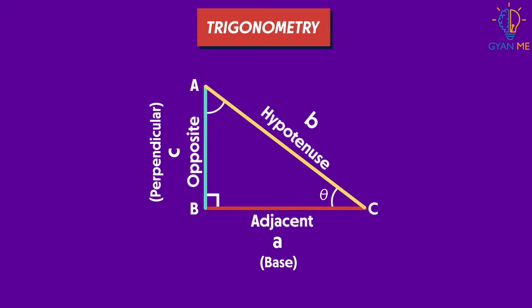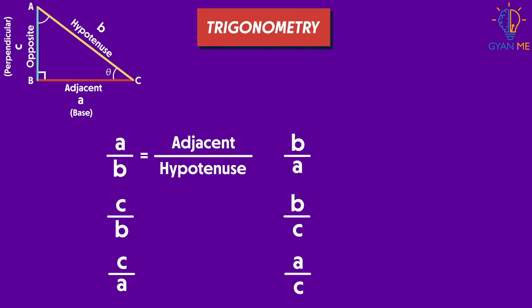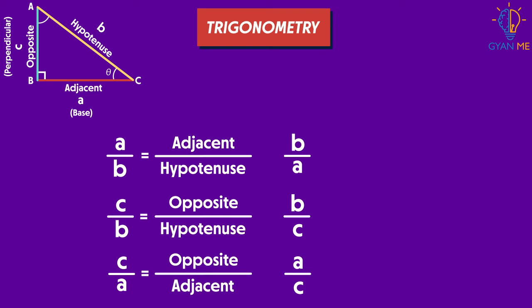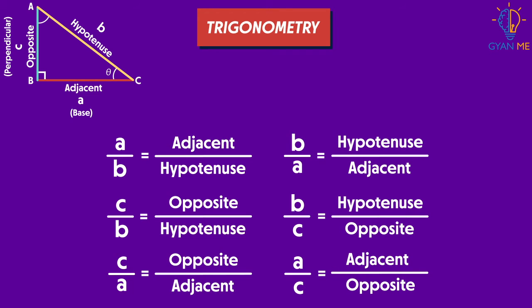Okay, now let's replace this a, b and c with the respective names. The first ratio is the adjacent upon hypotenuse. The second one is opposite upon hypotenuse. Third one is opposite upon adjacent. And the other three are inverse of this ratio as you can see.